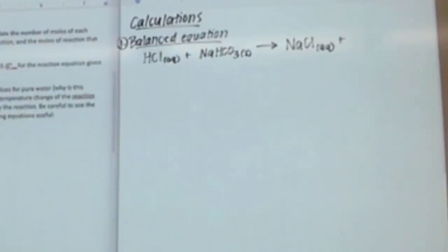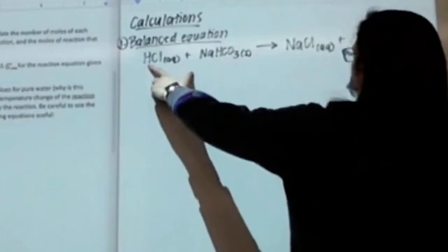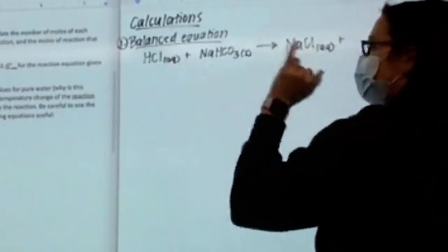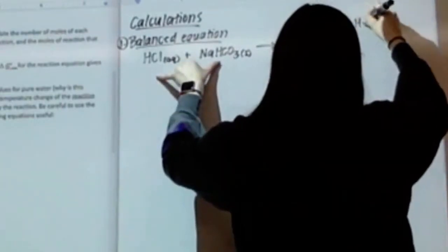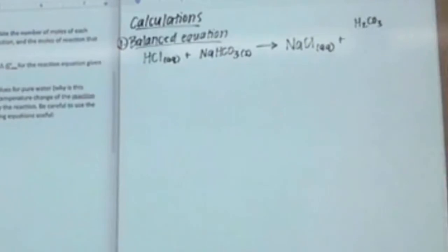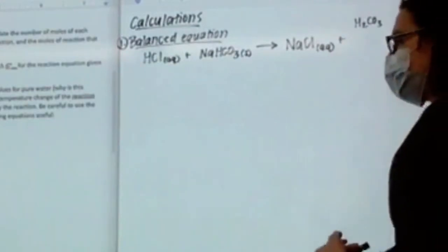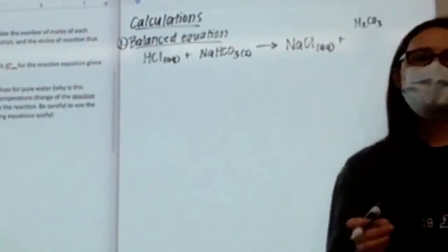Looking at the other product — I'll write it up here, but it's actually an unstable substance. The other product should be H2CO3, which is called carbonic acid. Carbonic acid is unstable and actually decomposes. What was one of the observations you made when you mixed the two together?